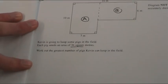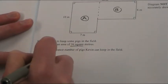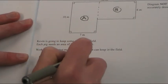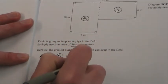Down here, I'm going to write area of A: 10 times 7, and that is 70 square meters.